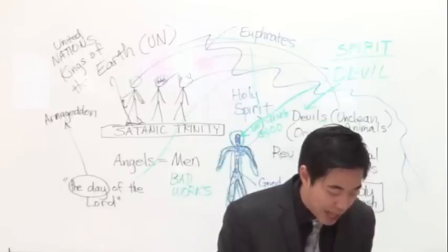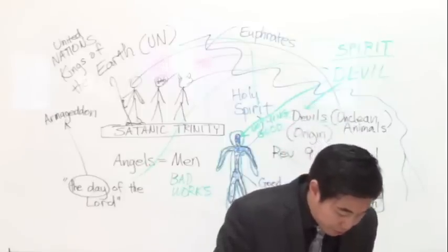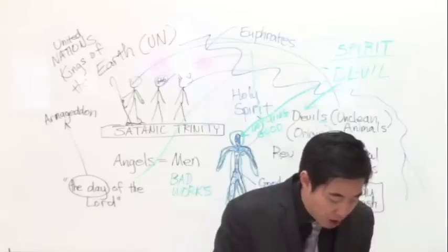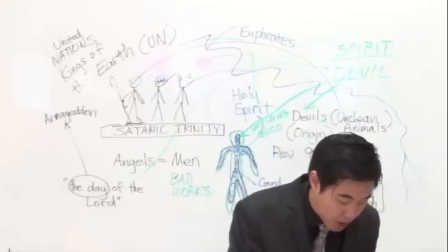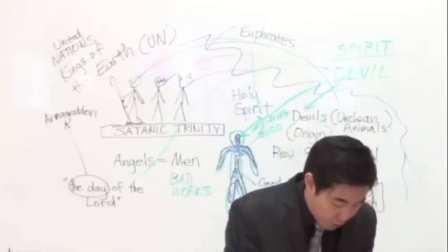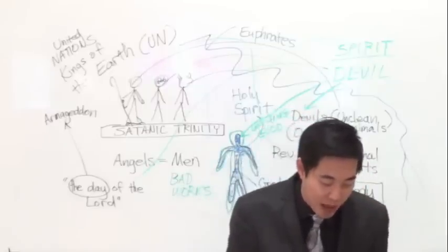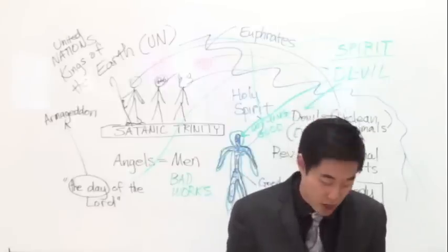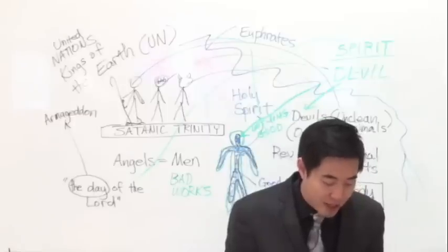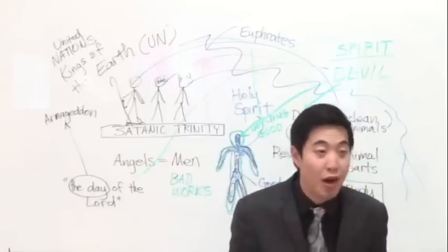Verse seven. They shall run like mighty men. That's God's army that joins him. They shall climb the wall like men of war and they shall march everyone on his way and they shall not break their ranks. Look at that. Verse eight. Neither shall one thrust another. They shall walk everyone in his path. And when they fall upon the sword, they shall not be wounded. Look, there's no way you're going to win. Verse nine. They shall run to and fro in the city. They shall run upon the wall. They shall climb up upon the houses. They shall enter in at the windows like a what? Thief.